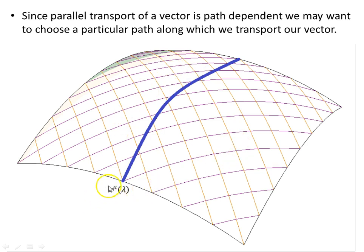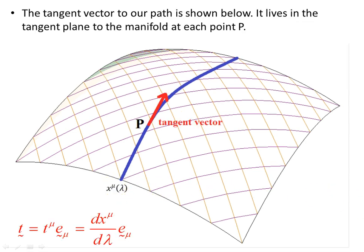Visually this is a two-dimensional manifold, so mu would be 1 and 2 for two dimensions. The tangent vector to our path lives in the tangent plane to the manifold at each point P. Our tangent vector in component form is T contravariant mu times the tangential basis vector E subscript mu, written as dx^mu / d_lambda, since the coordinates are a function of lambda and we differentiate those to get the tangent components.